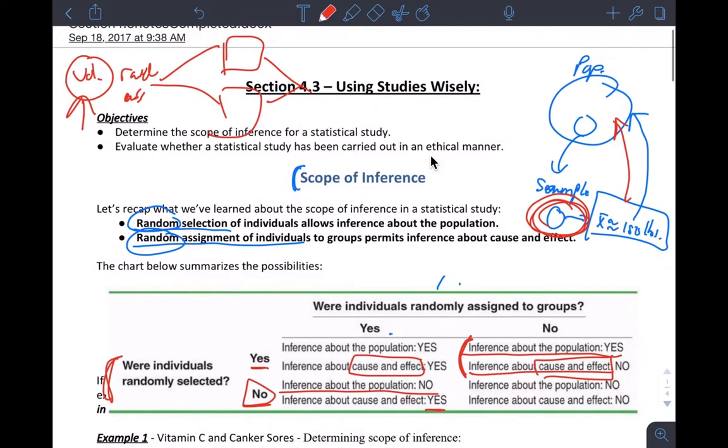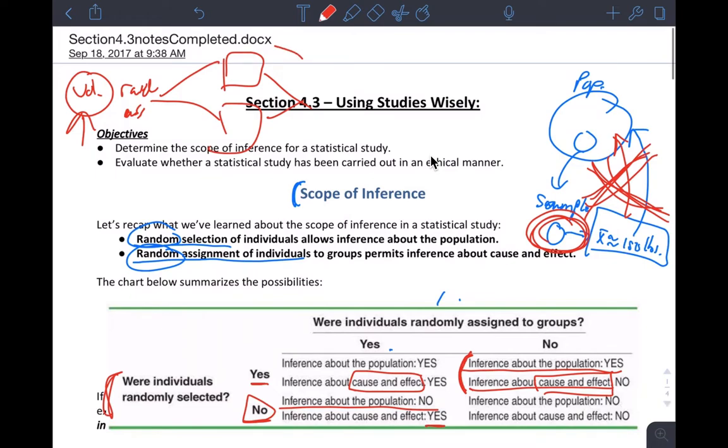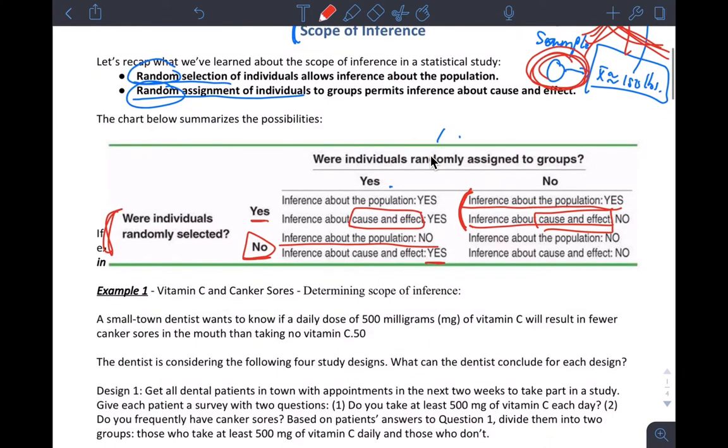Then I cannot do this. Yes, this link is broken. I cannot go from my results back to the population. So I just have this going on right here. And then hopefully I can establish cause and effect. And then finally, if I do not randomly select people and I don't perform a proper experiment, I can't do anything. Basically, the results I get are meaningless.